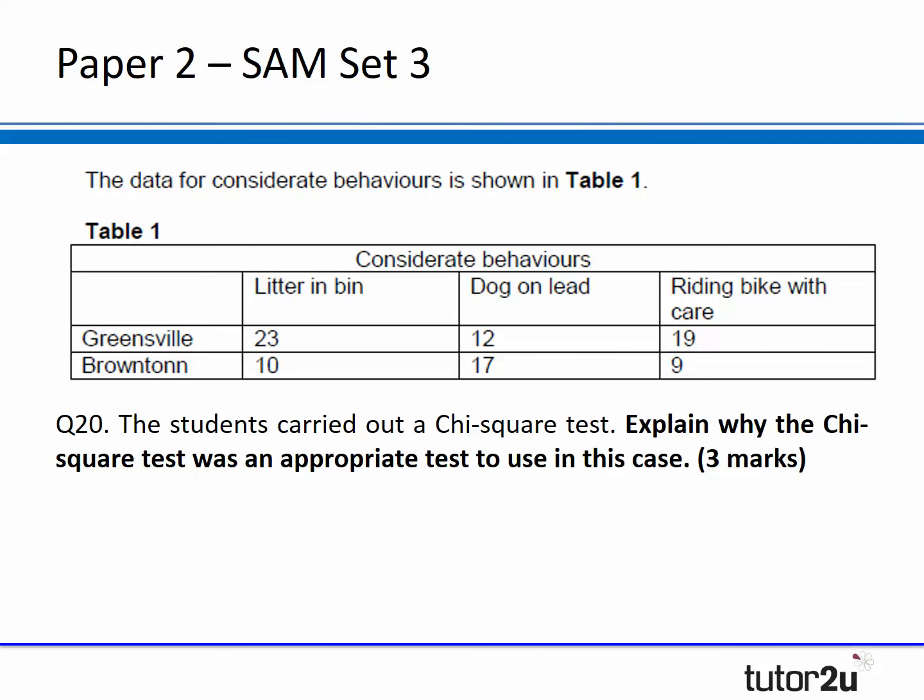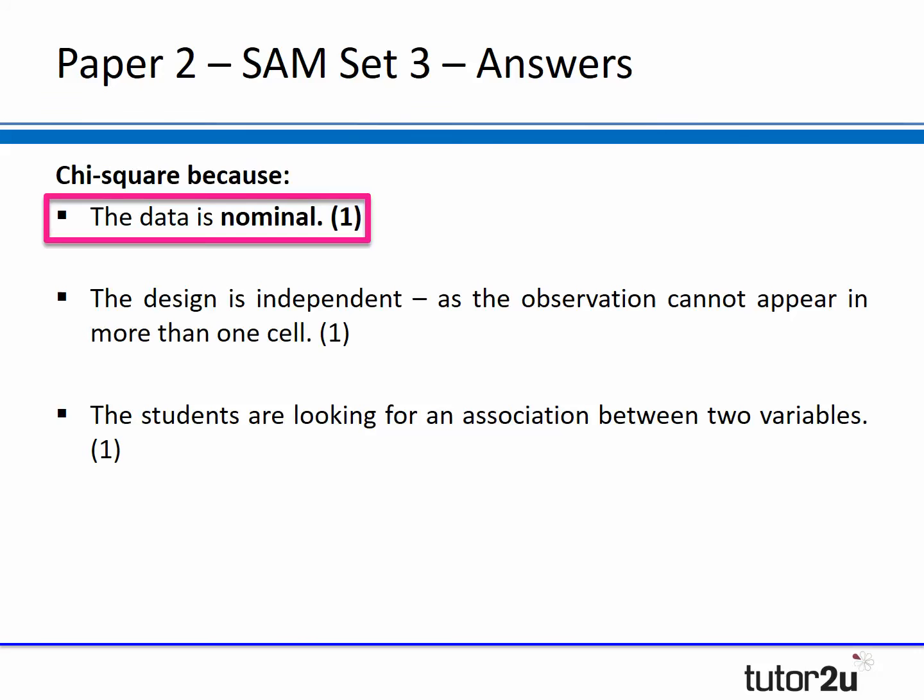If we go to the third set of sample assessment materials, there's a data table and question 20 says the students carried out a chi-square test - explain why a chi-square test was appropriate in this particular case. Again, on the mark scheme, the first point for marks is that students need to be able to say the data in this particular case is nominal. So you can see straight away that it's really important for students to understand levels of measurement in order to answer any question that requires them to select an appropriate statistical test.